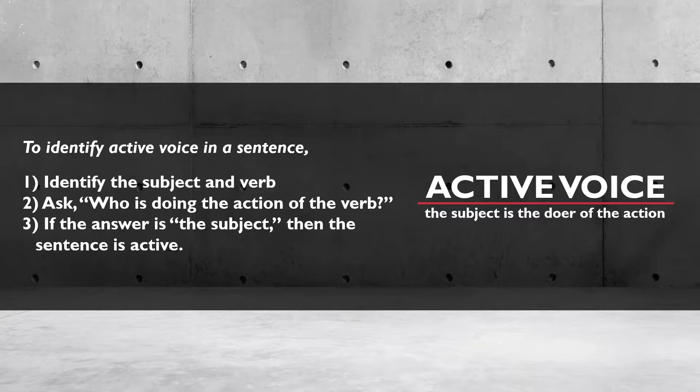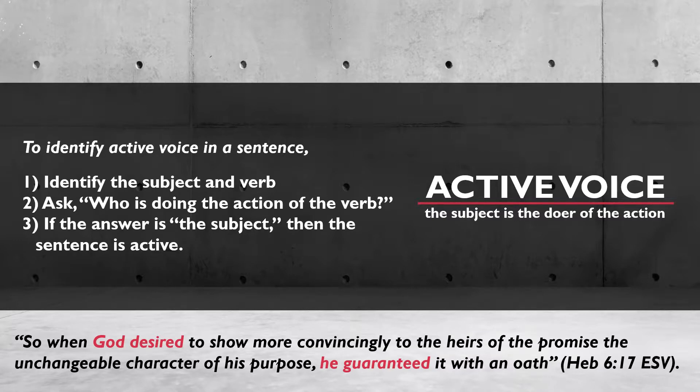To identify active voice in a sentence: identify the subject and verb, ask who is doing the action of the verb, and if the answer is the subject, then the sentence is active. Let's apply these three steps to a sample sentence: 'When God desired to show more convincingly to the heirs of the promise the unchangeable character of his purpose, he guaranteed it with an oath.'